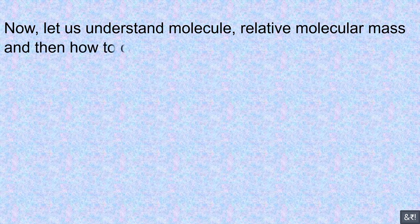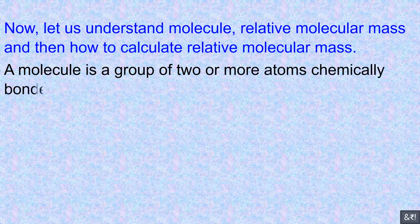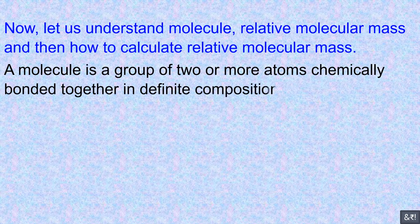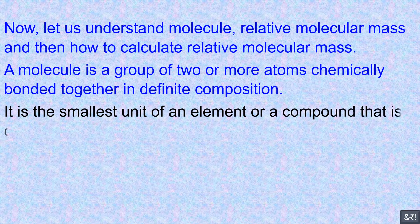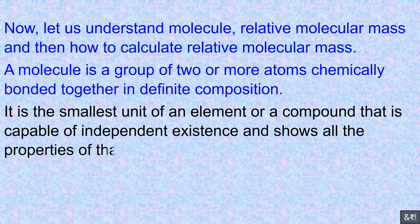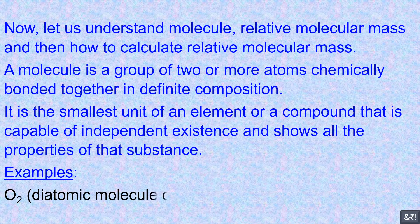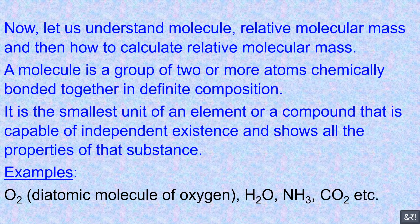Let us understand molecule, relative molecular mass, and then how to calculate relative molecular mass. A molecule is a group of two or more atoms chemically bonded together in definite composition. It is the smallest unit of an element or a compound that is capable of independent existence and shows all the properties of that substance. Examples: O₂ (diatomic molecule of oxygen), H₂O, NH₃, CO₂, etc.